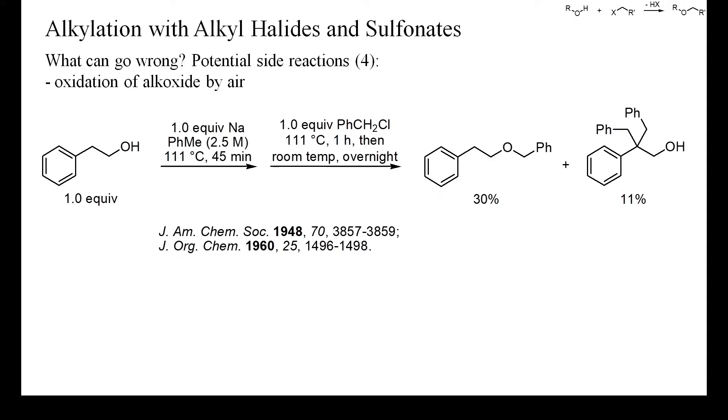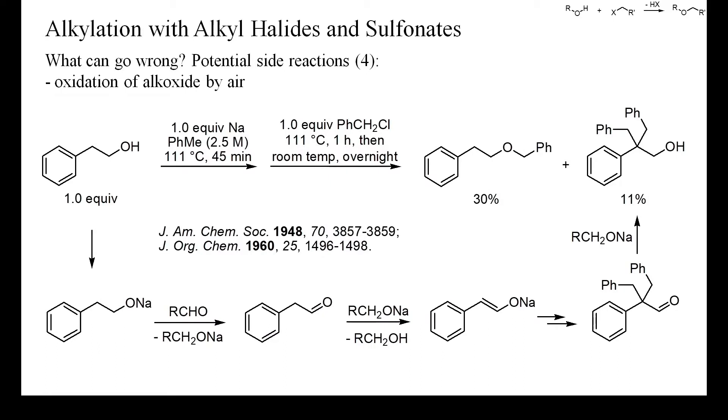Alkoxides with alpha-hydrogen are readily oxidized by air or by aldehydes or ketones, and such oxidations can cause the formation of unexpected by-products. In this example, a seemingly simple benzylation only yielded a small amount of the expected ether and significant quantities of a carbon-benzylated alcohol. Such alkylations at carbon can be triggered by catalytic amounts of aldehydes, as shown here.